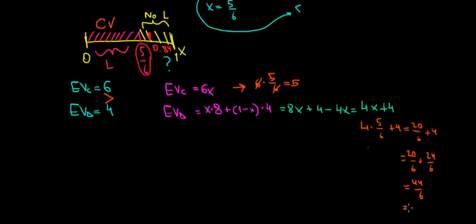So even starting at this level of 5/6, we can see already that the expected value of the dogs is higher than the expected value of the cats. 7.33 is higher than 5.